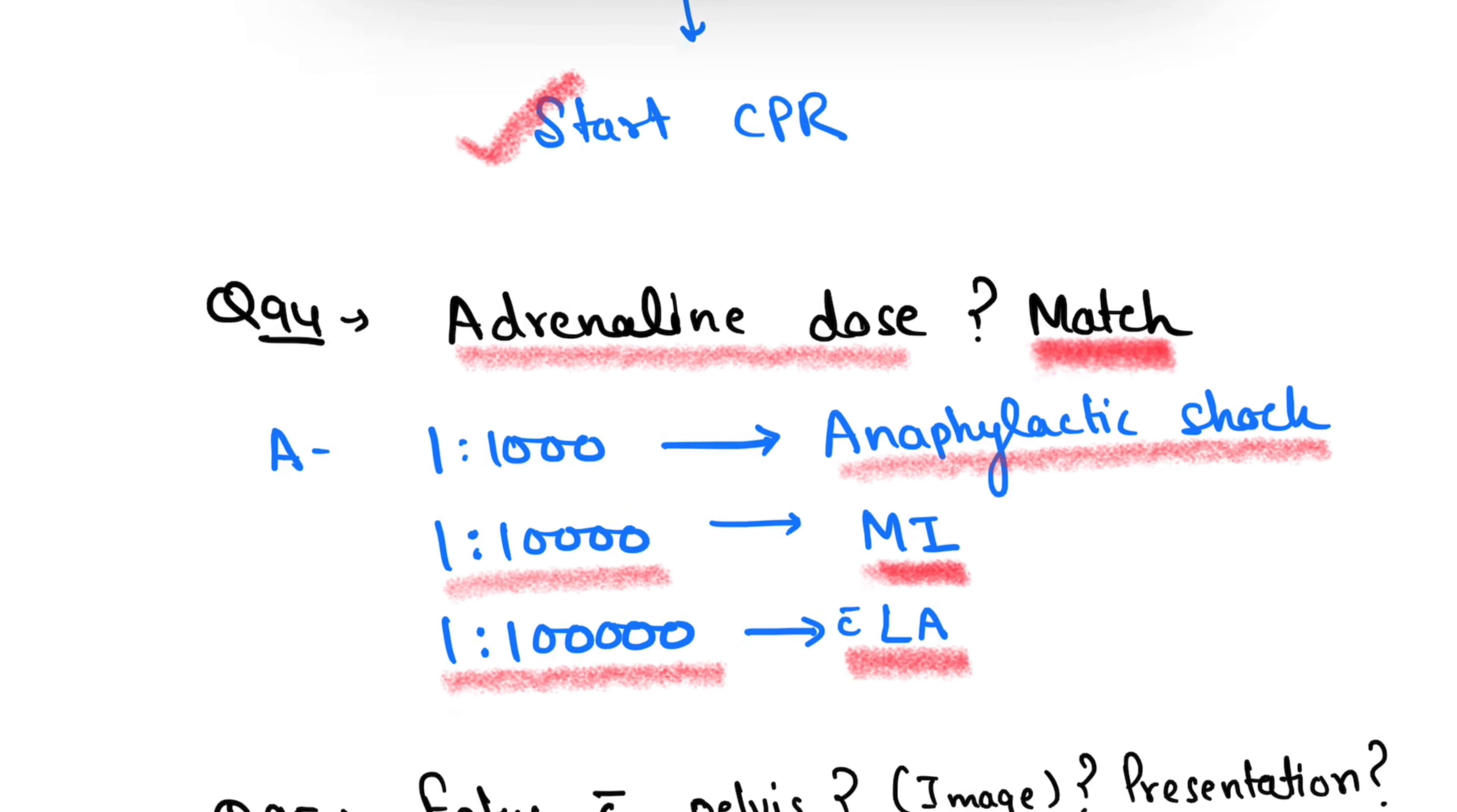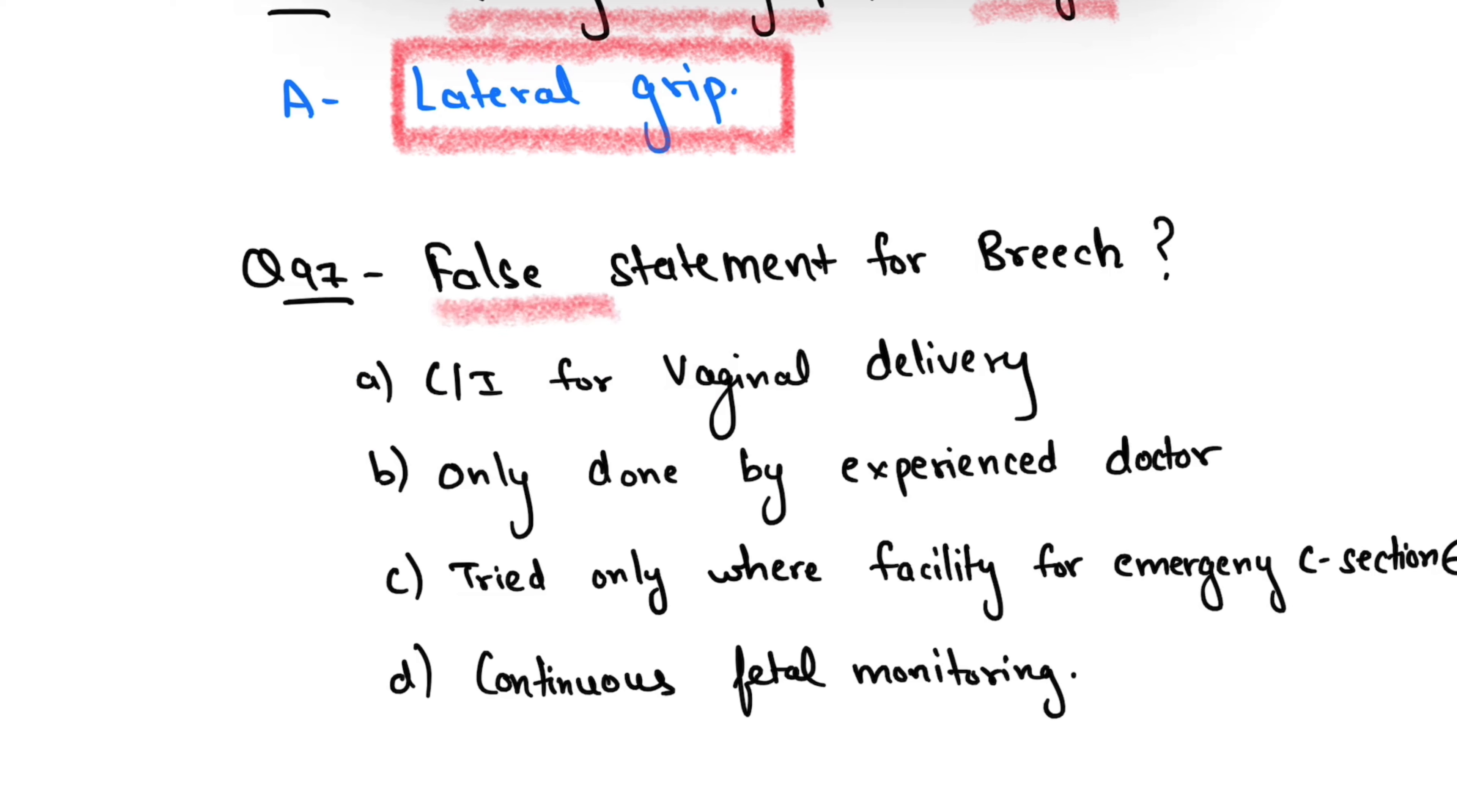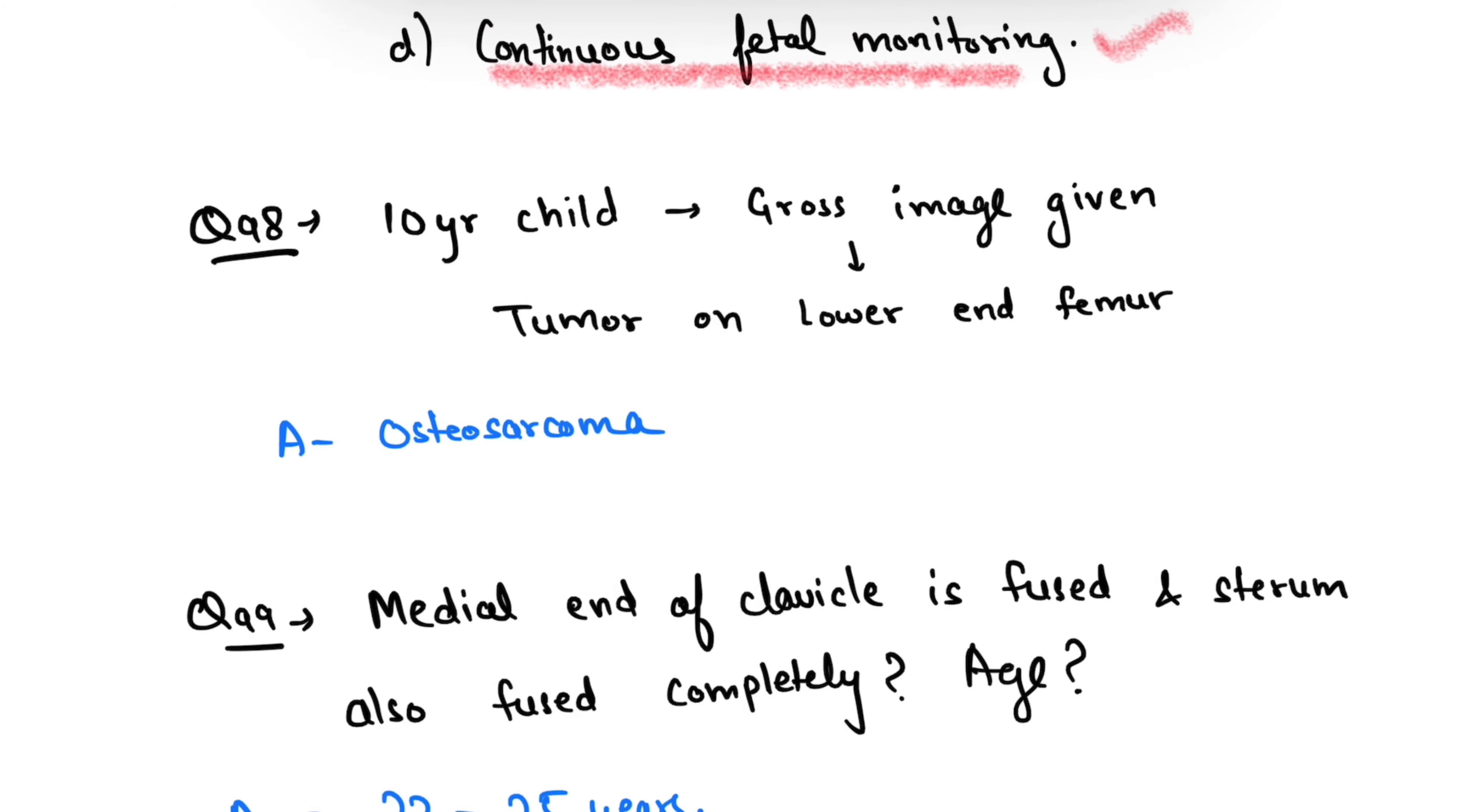Question number 95: fetus with pelvis is given and image was given, asking about the presentation. The presentation is right occipital anterior. Identify the grip - the image was given and that was a lateral grip. False statement about breach: the false statement is contraindication for vaginal delivery. This is the answer. Only done by experienced doctor - this statement is correct. Tried only where facility for emergency C-section is present - also correct. Continuous fetal monitoring should be done - also correct.